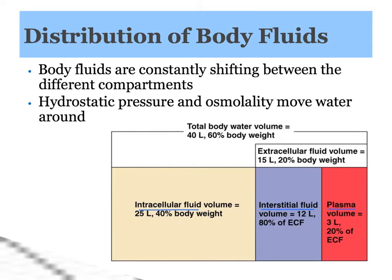The extracellular fluid is the fluid in these two compartments, and sometimes extracellular fluid is even more broken down. But I just want you to think about fluid being found in these three areas: intracellular, and then interstitial and plasma. Plasma and interstitial make up extracellular fluid volume, and all of it, of course, is taking up about 60% of your body weight.